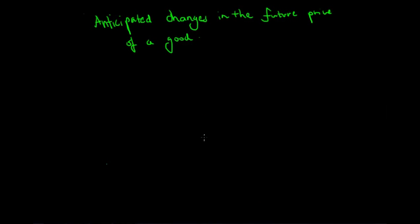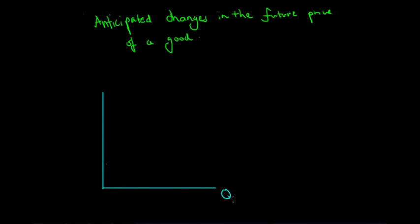In this lecture we will look at how anticipated changes in the future price of a good can affect the current price of that certain good. We will examine this using supply and demand analysis, with our traditional graph of quantity on the x-axis and price on the y-axis, using the example of the market for TVs.